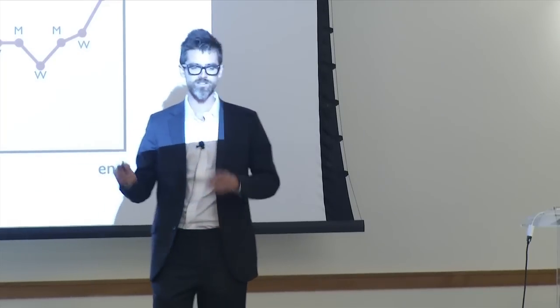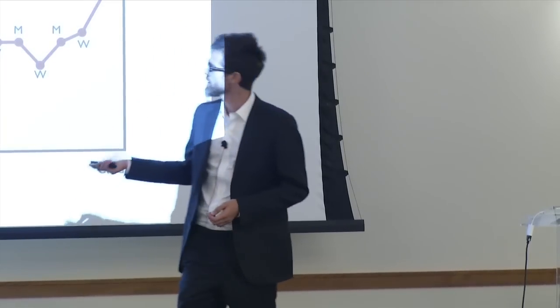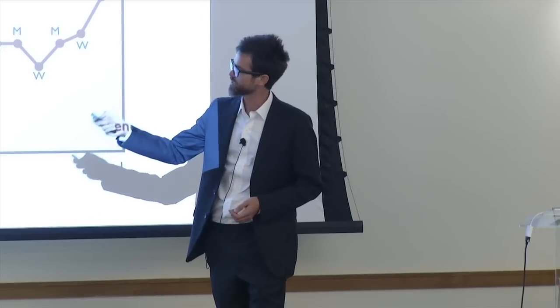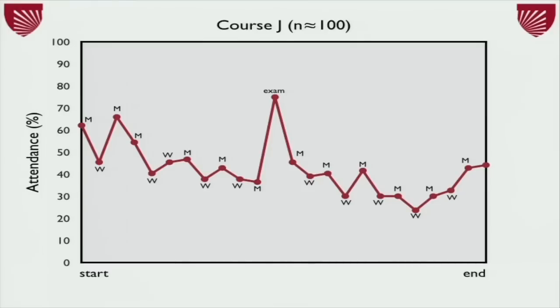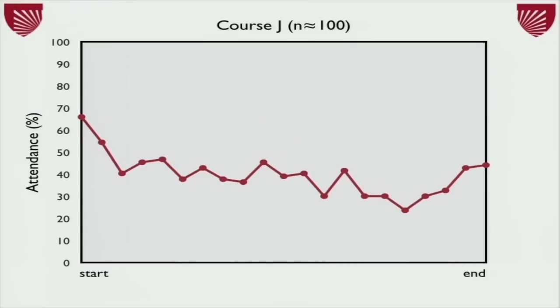You can take the average attendance. That's fine. It's okay. The better thing to do is, first of all, get rid of the weird shopping period. Get rid of the exams. Get rid of optional lectures. And so when you do that for this course, it looks like this. And then fit a line to it. That gives you a slope. It gives you an intercept. It gives you a starting point. It gives you an ending point.